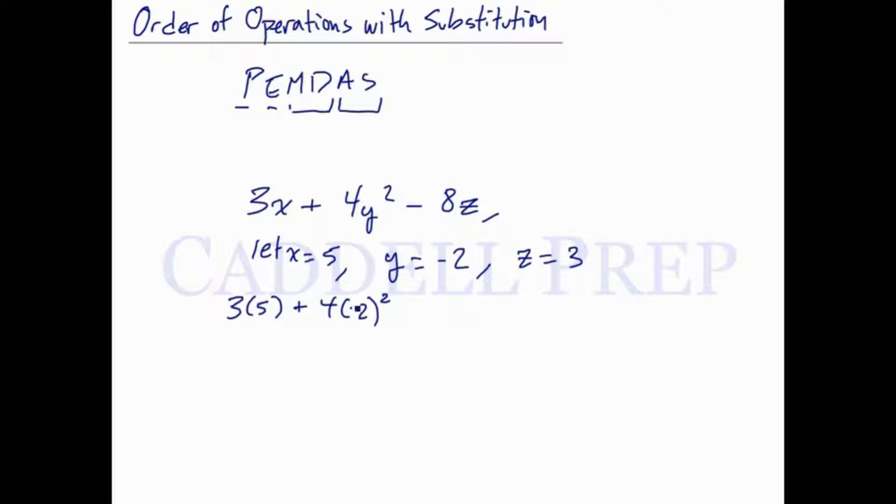Because it's y squared, the entire value for y gets squared. It's very important to use parentheses here. Minus 8 times z, which is 3.